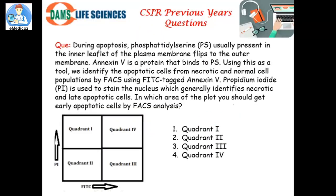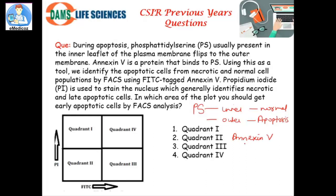To start with, I will begin with a question: you have phosphatidylserine (PS) which is usually present in the inner leaflet of a normal cell. This PS flips to the outer leaflet in a cell undergoing apoptosis. You then have a protein called annexin 5 which can bind to this PS and helps in the detection of apoptotic cells from necrotic and normal cells. This annexin 5 is labeled with a fluorescent dye called FITC.